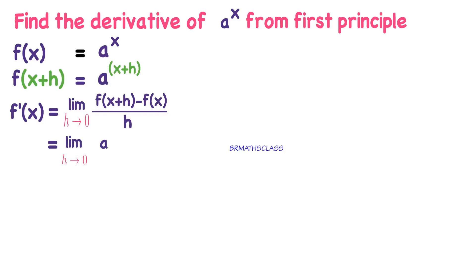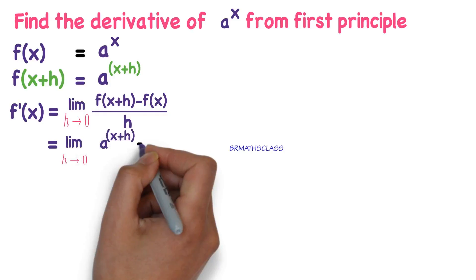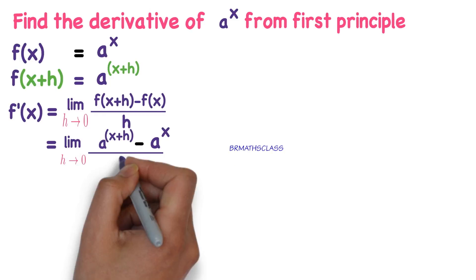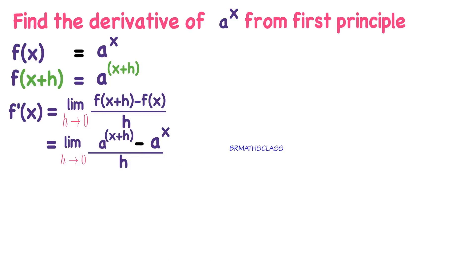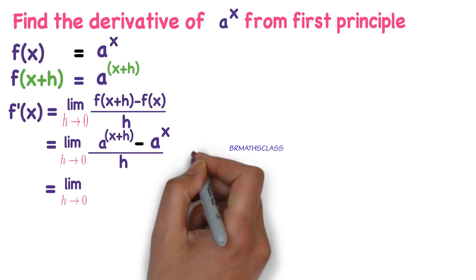Now you apply these two things here. Limit h tends to 0. F of x plus h is a power x plus h minus f of x is a power x whole divided by h. Just substituted f of x plus h, f of x in the formula.